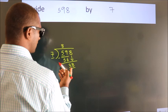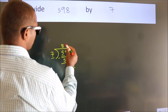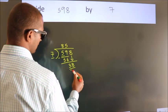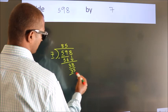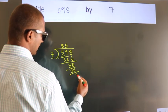A number close to 38 in the 7 table is 7 times 5, which is 35. Now we subtract. We get 3.